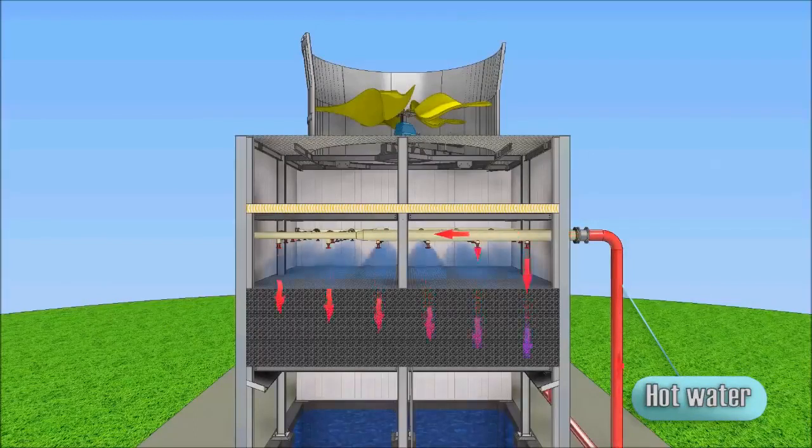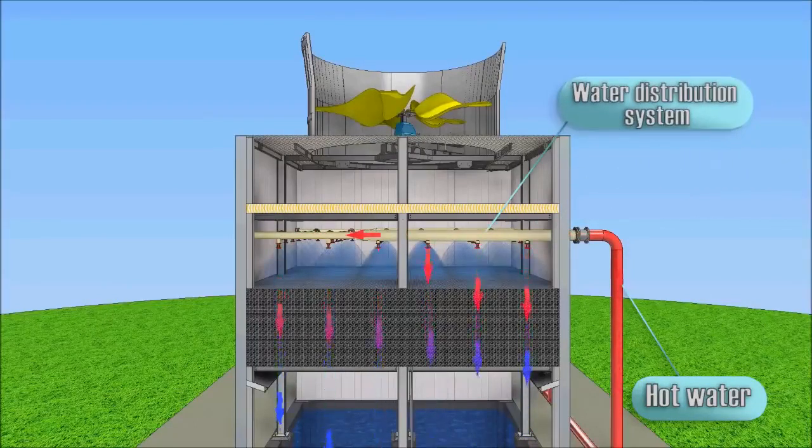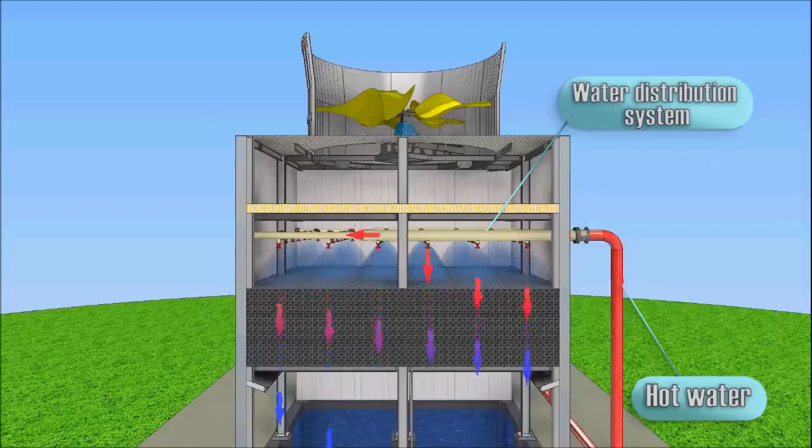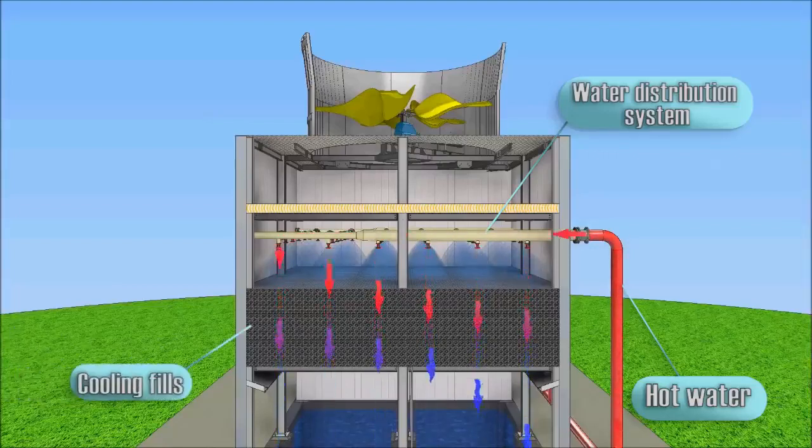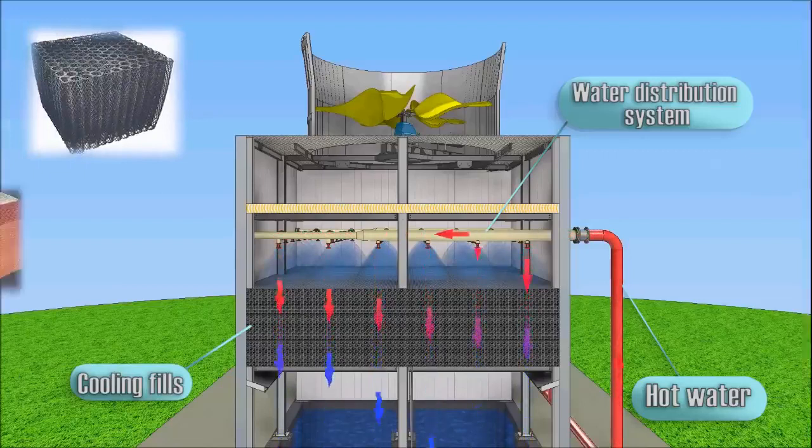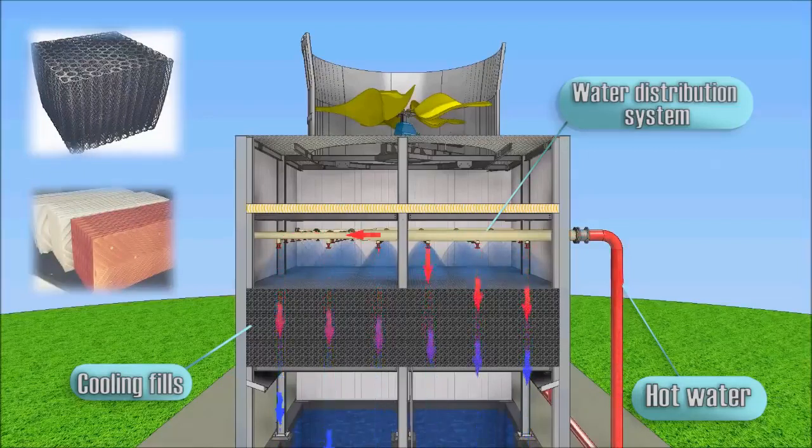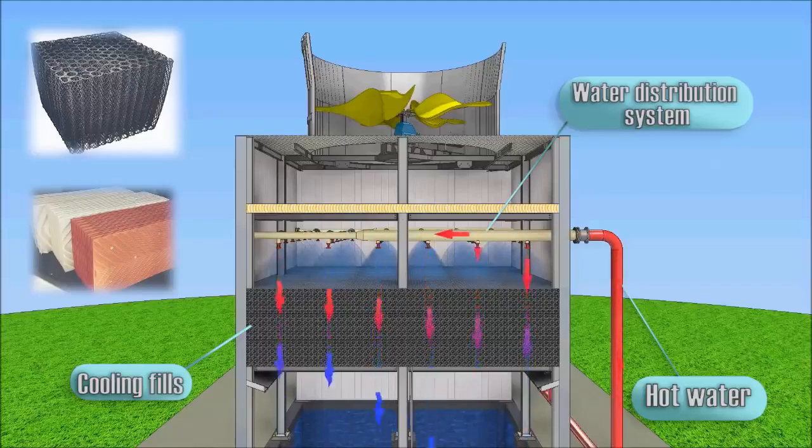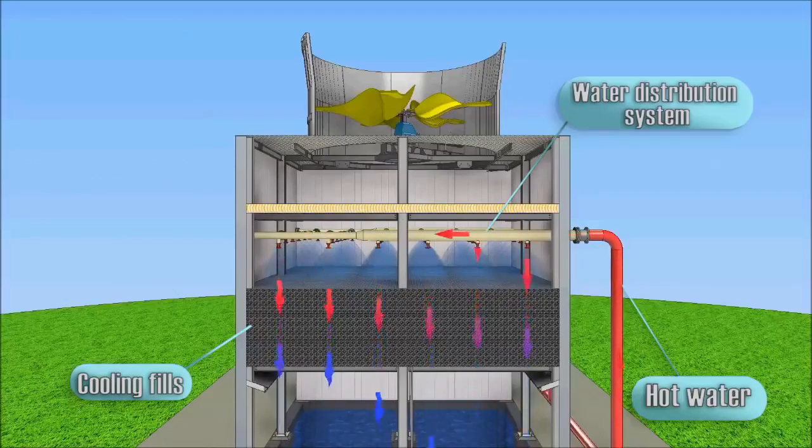Hot water from various sources such as machines or heating processes flows through pipes to the distribution system of the cooling tower, which produces even water distribution to all the area of fills by the spray nozzles. On the fills, the water film is formed from the surface of which evaporation of the water encounters air flow.